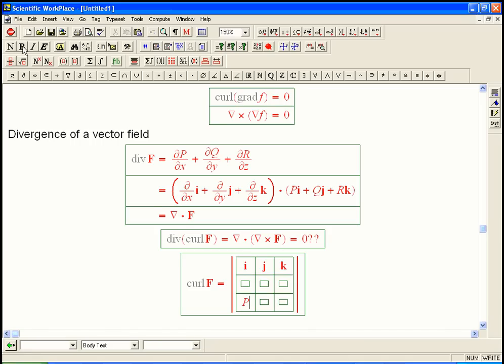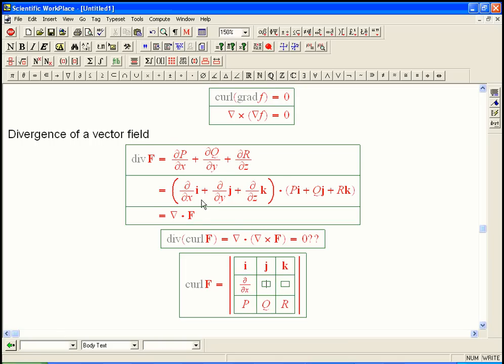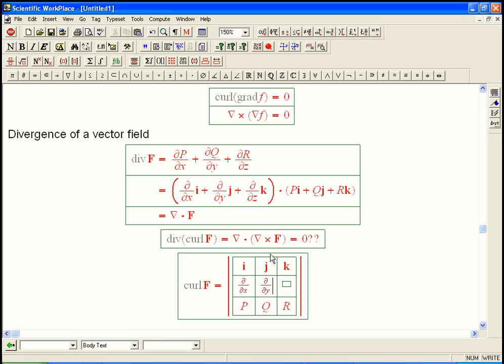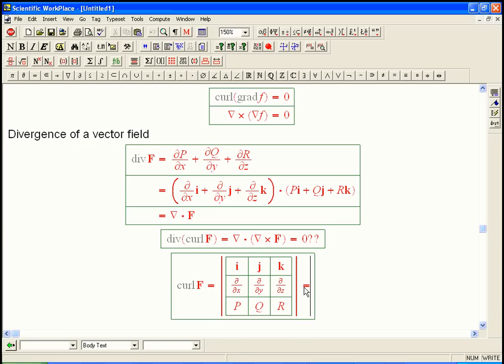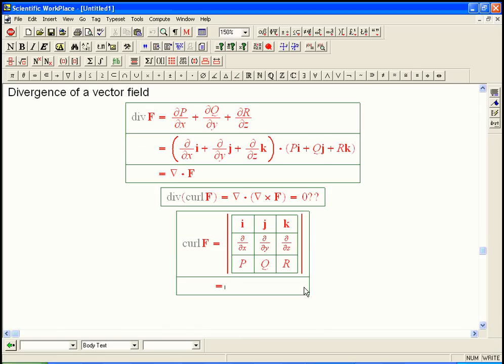Then you put the functions P, Q, and R on the bottom, the components of F. And then you put these guys, the components, so to speak, of this del operator here. And so that's just writing out the 3 by 3 determinant formula for what del cross F would be. And so that reminds us exactly what we're going to get.